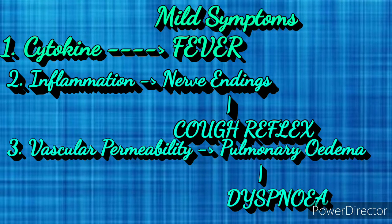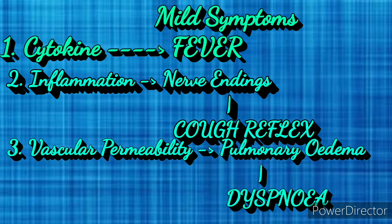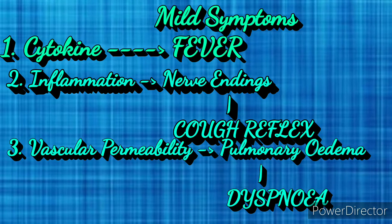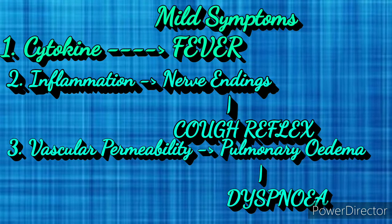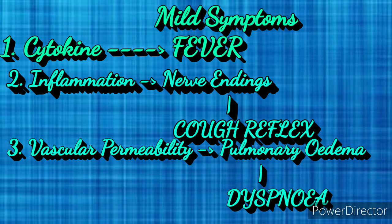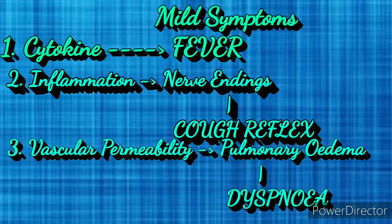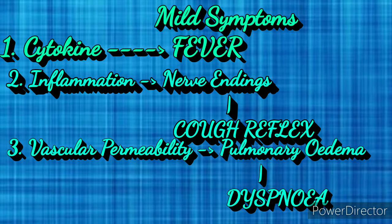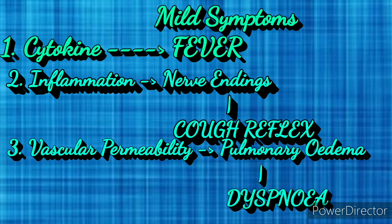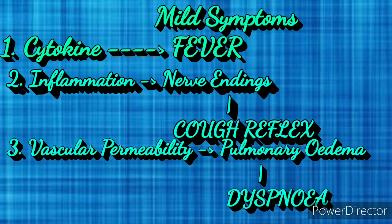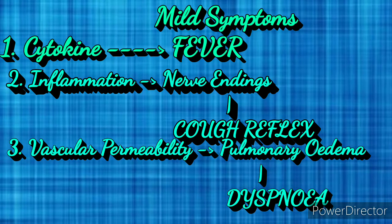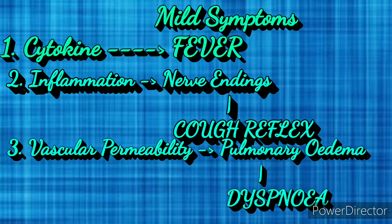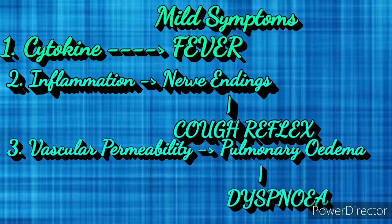TNF-alpha and interleukin-6, on the other hand, are pro-inflammatory cytokines and cause increased vascular permeability of the pulmonary capillaries, leading to leakage of fluid into the interstitial space causing interstitial edema, and then into the alveoli leading to pulmonary edema, which is responsible for dyspnea or difficulty in breathing.